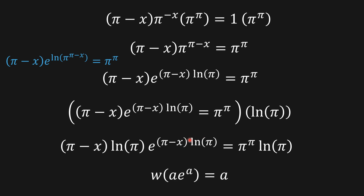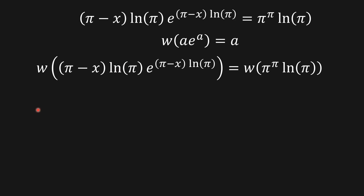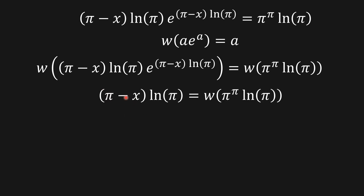We can now apply the Lambert W function to both sides of the equation. Applying W to both sides, the right side simplifies to just a, which is (π minus x) times ln of π.